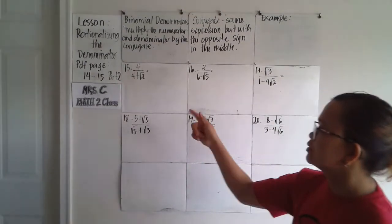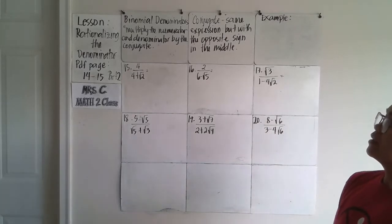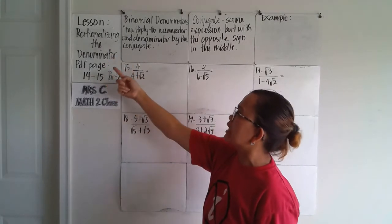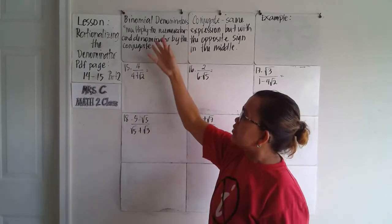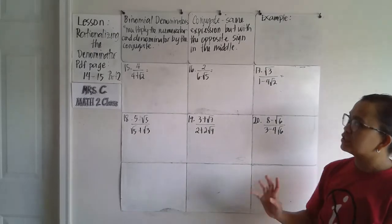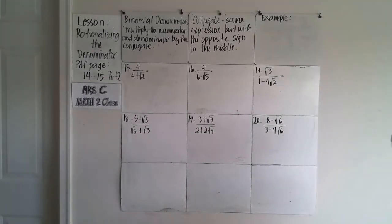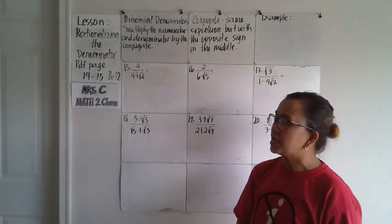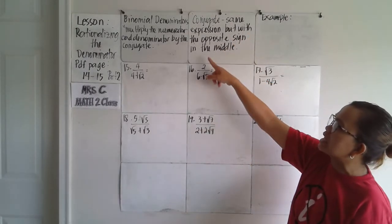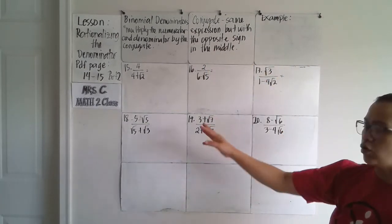Welcome back to Mrs. C. Matthew's class online. This is part two of rationalizing the denominator. This time we'll be dealing with binomial denominators, which means we multiply the numerator and denominator by the conjugate. Conjugate means the same expression but with the opposite sign in the middle.